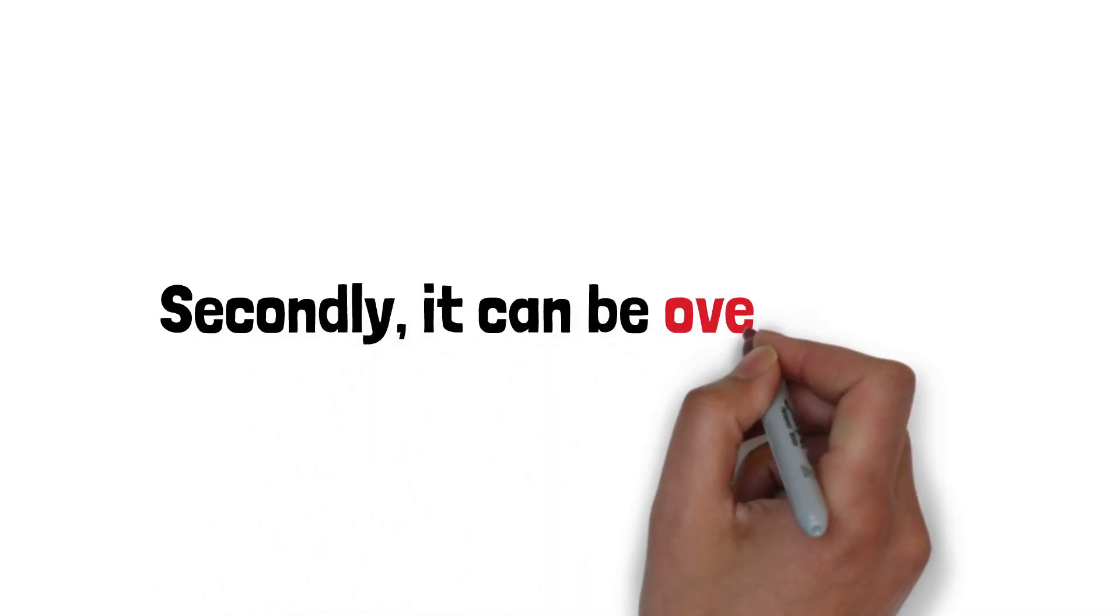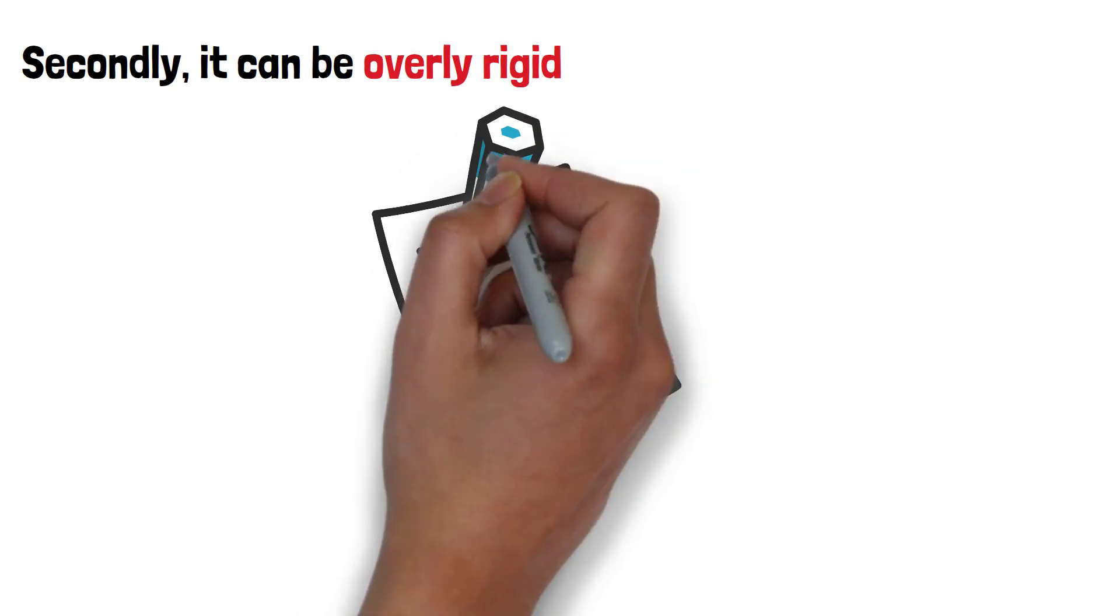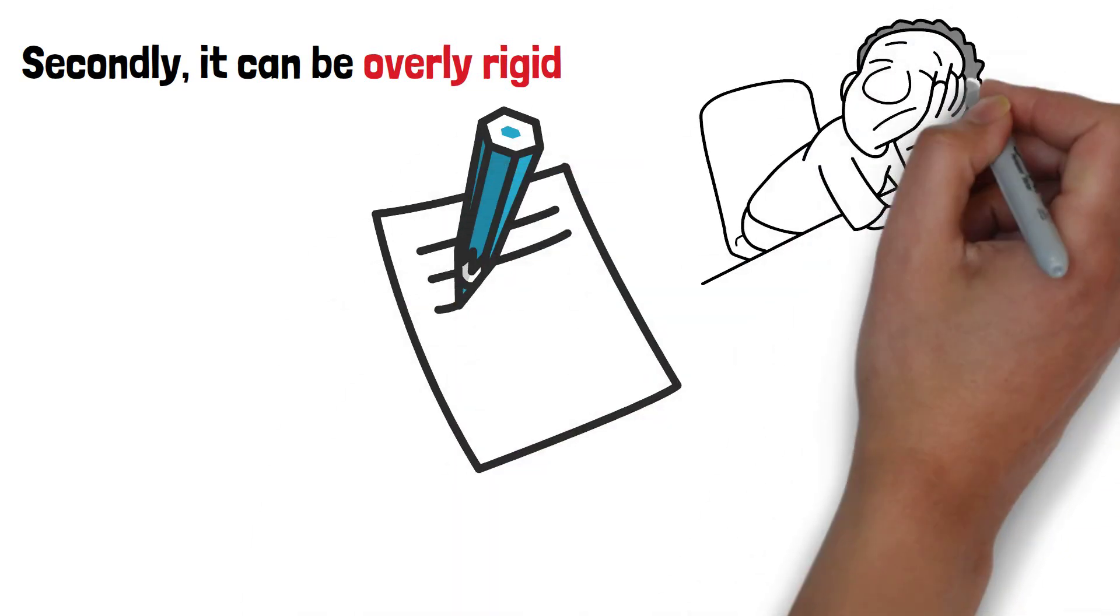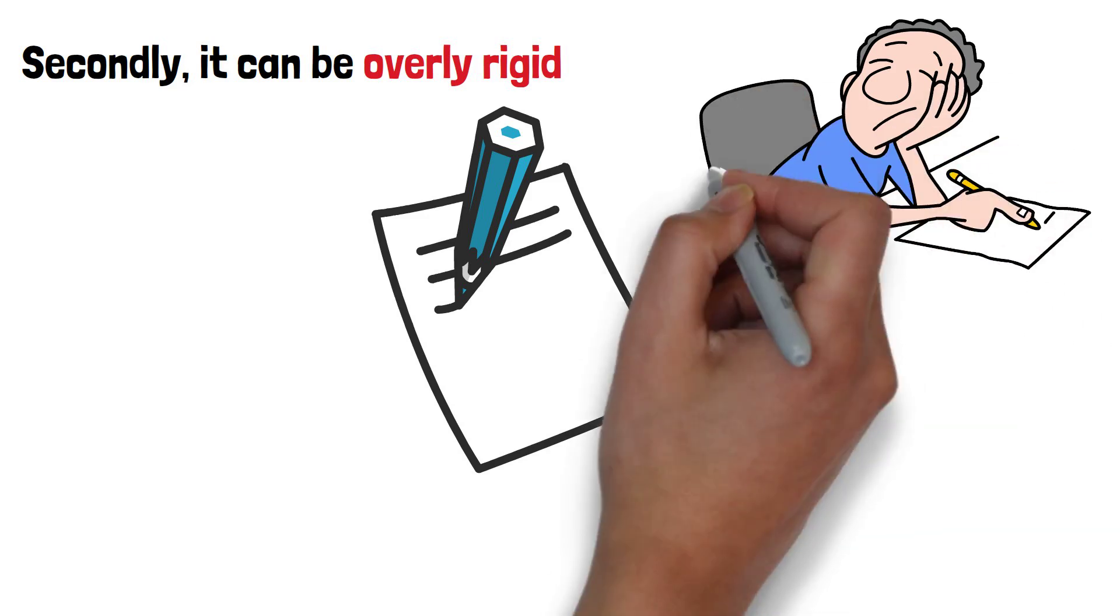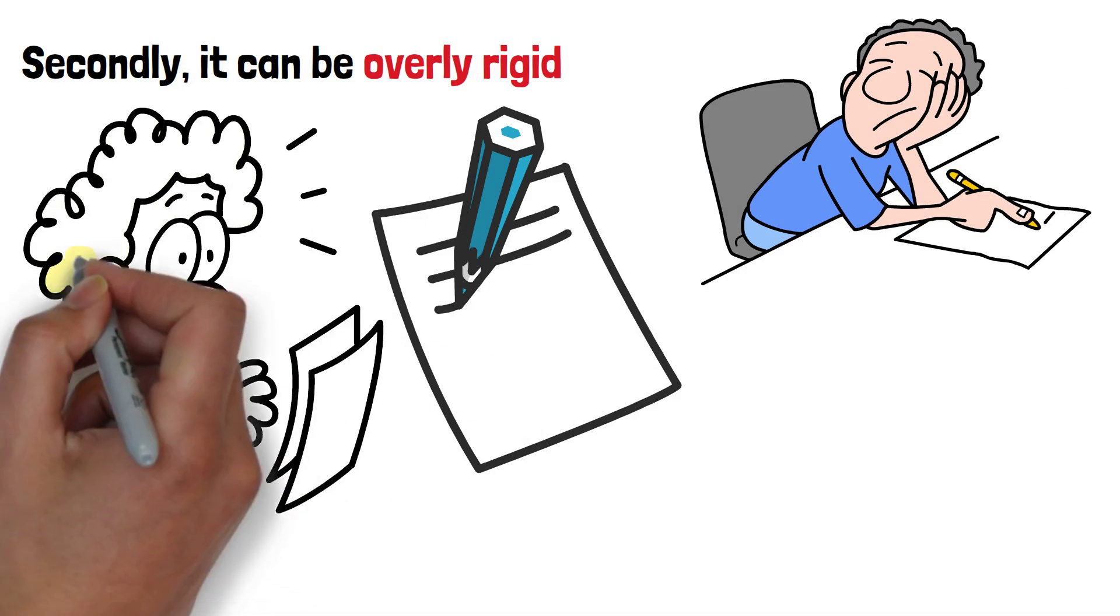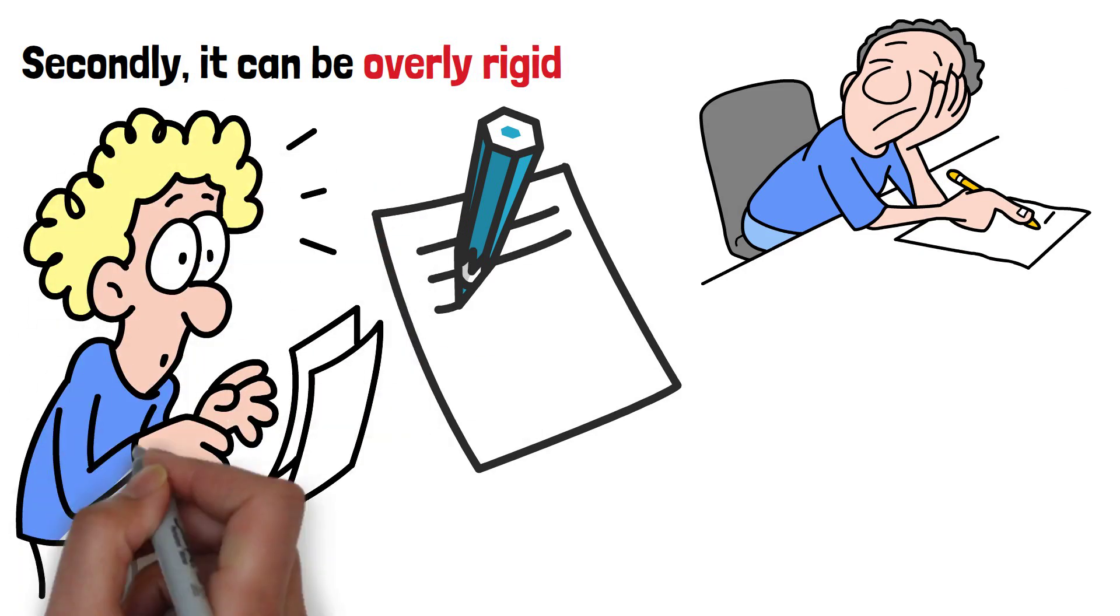Secondly, it can be overly rigid. Quantitative research tends to use fixed questionnaires or surveys, which might limit participants from providing nuanced or unexpected responses. This can result in missing valuable insights that could have emerged through more open-ended or flexible approaches.